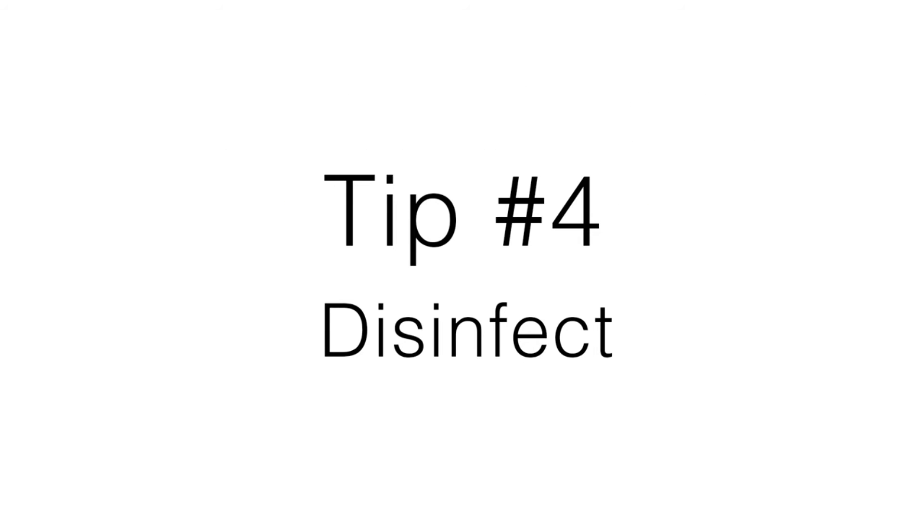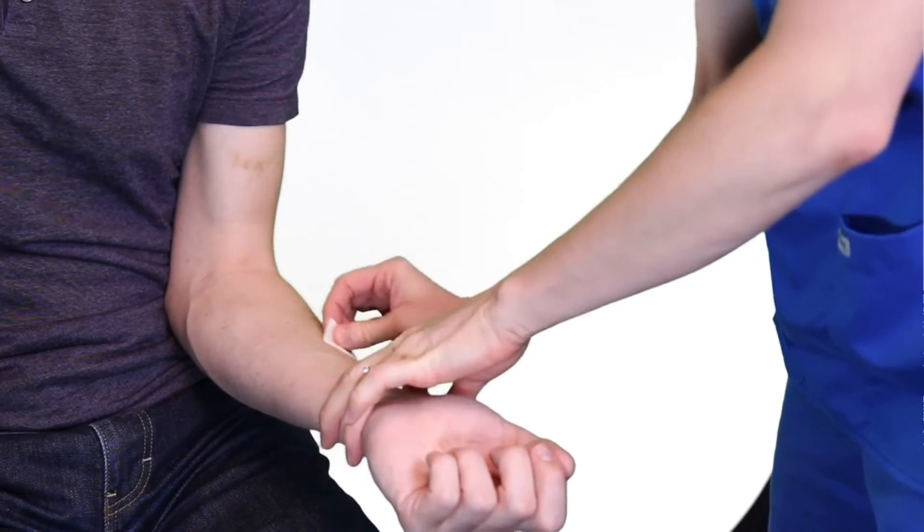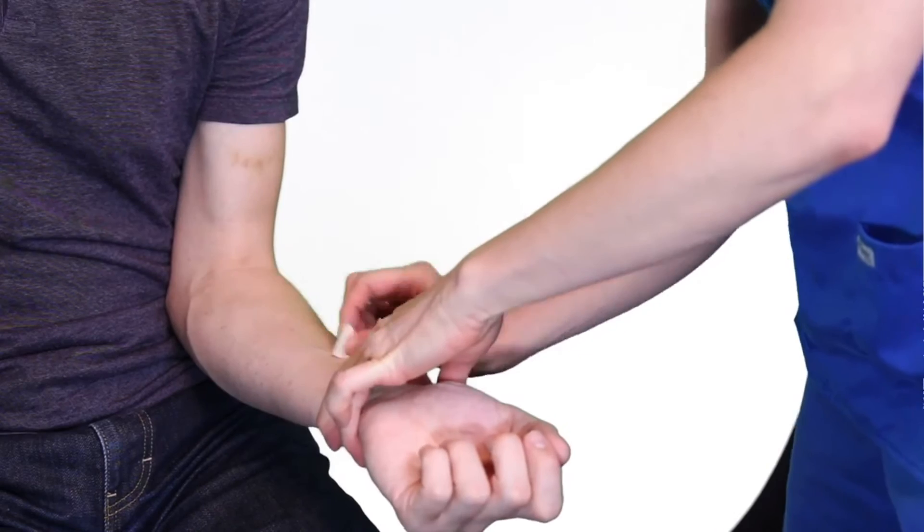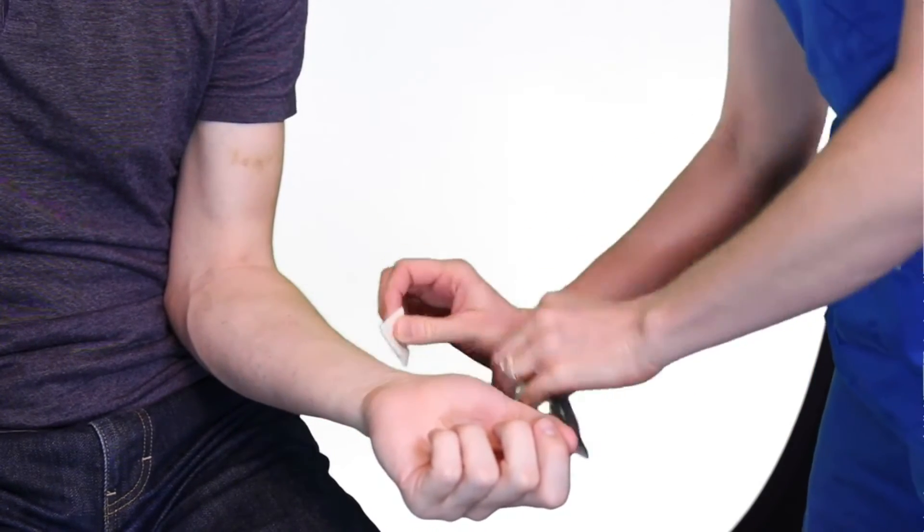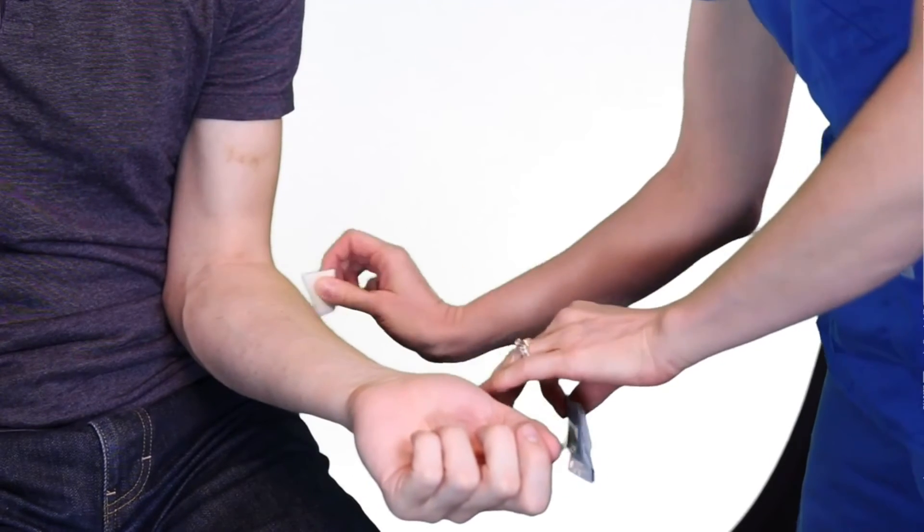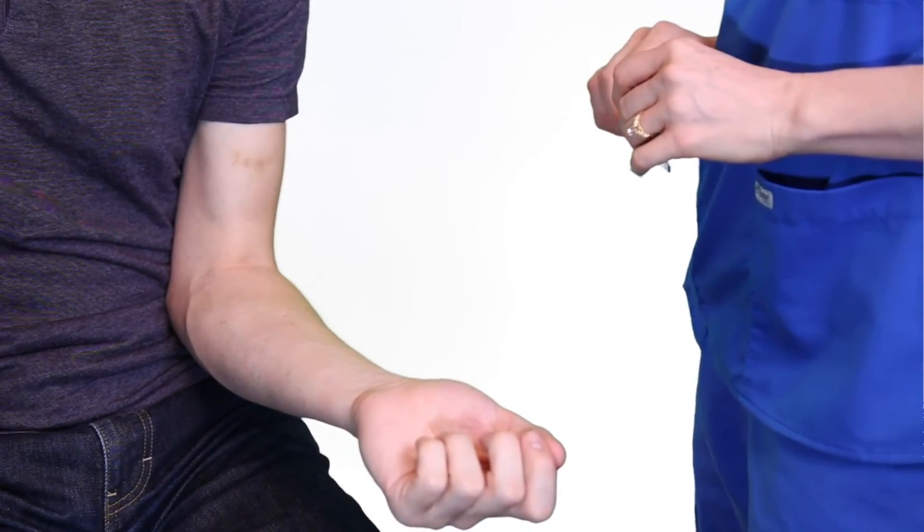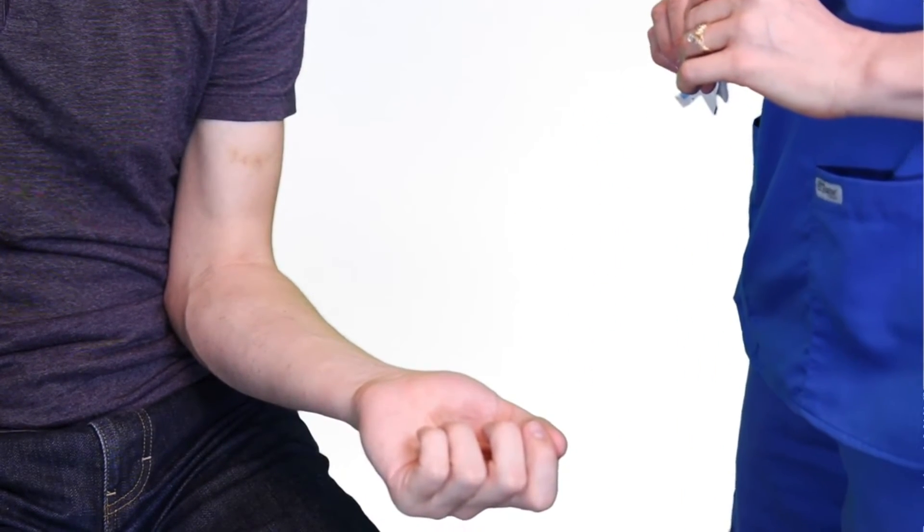Tip number four, disinfect the insertion site using an alcohol wipe by stroking in the direction of venous flow towards the heart to improve vein filling. Rubbing the area vigorously causes the veins to become much more visible and prepares other possible nearby veins which may be suitable. Remember to let the alcohol dry to prevent painful stinging for the patient.